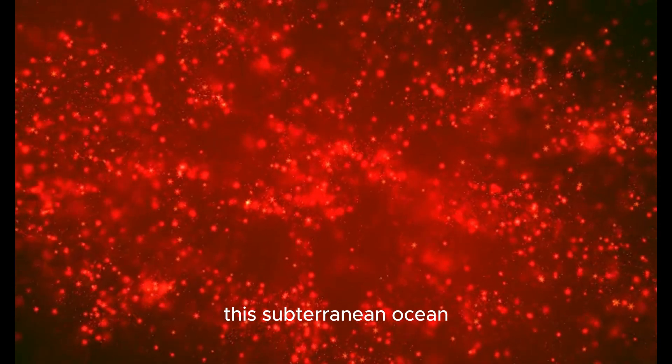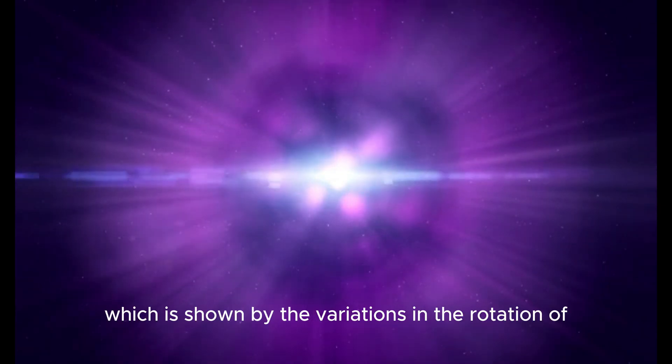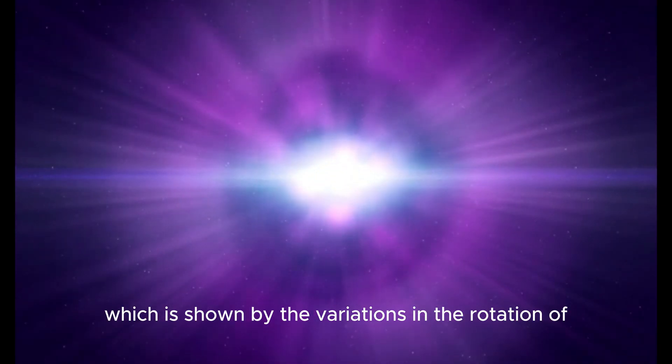This subterranean ocean separates a thick layer of surface ice from the underlying rock, which is shown by the variations in the rotation of the moon.